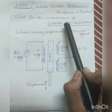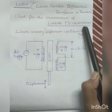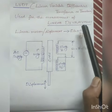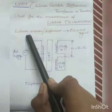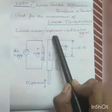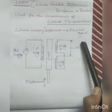It is used for the measurement of linear displacement. That is, LVDT is an instrument that converts linear motion or displacement into electrical signal.